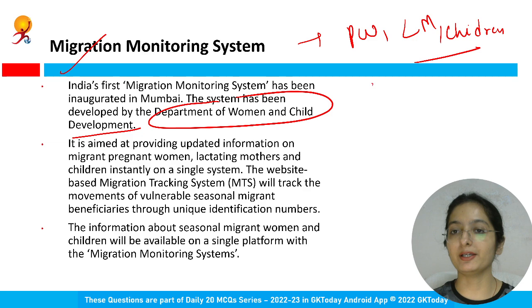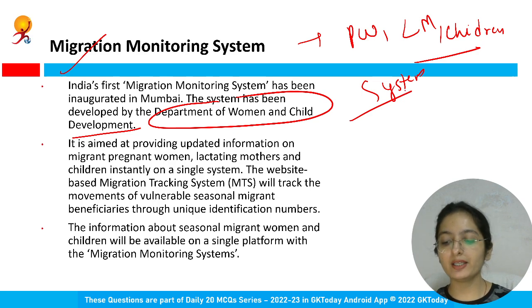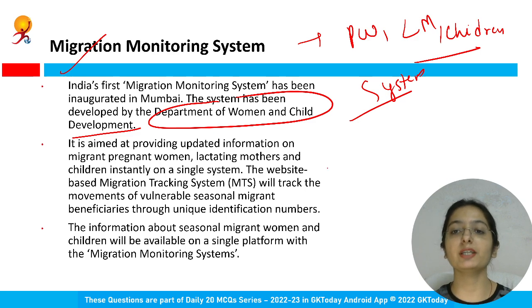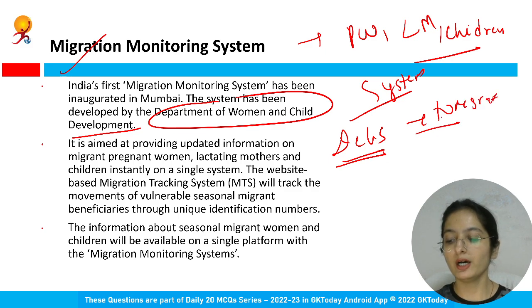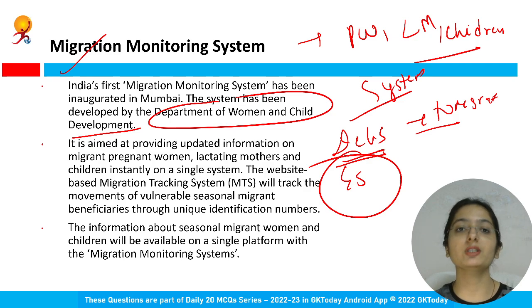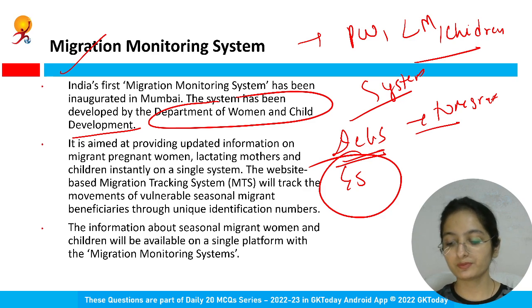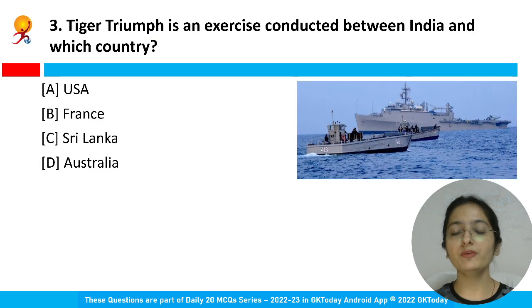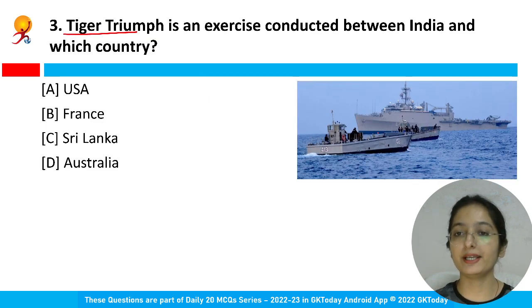This tracking system will track vulnerable migrant beneficiaries, and all information will be available on a single platform. The purpose is to improve delivery of services to migrant workers and make it easier for beneficiaries to avail government schemes when migrating from one place to another.